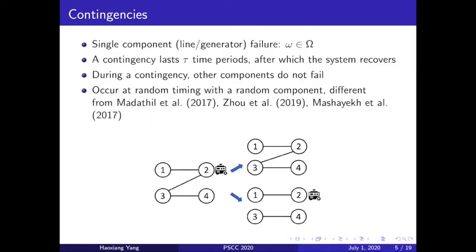It is possible that we see some components of this distribution network break and we call such failure a contingency. If we have a single component failure we call it an N-1 contingency and we denote this contingency set as omega. A contingency we assume lasts tau time periods and after that the system will recover to everything functional. During a contingency we assume that only the failed components will malfunction and other components are not affected. We assume random timing for the contingency which is different from the previous literature where they assume that the contingency is possible to occur every single time period.